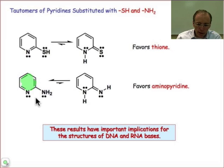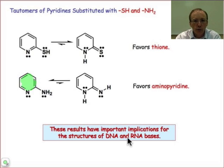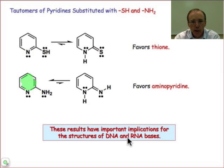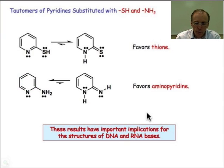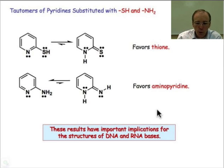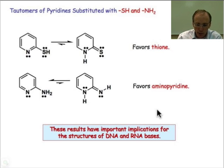The story goes that in the nucleic acids, the structure of the nucleic acids was actually not solved for over a year because Watson had proposed a structure that involved the wrong tautomeric form of an aminopyridine nucleic acid base. We'll learn more about that when we come to our discussion of the nucleic acid building blocks.